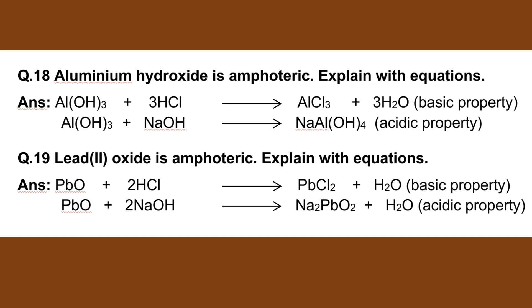Number 19. The basic property: PbO plus 2NaOH gives Na2PbO2 plus H2O. That is the acid property of PbO.